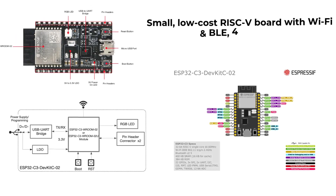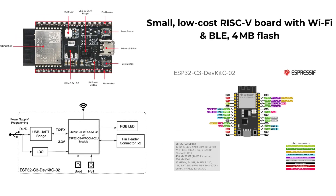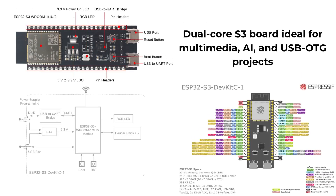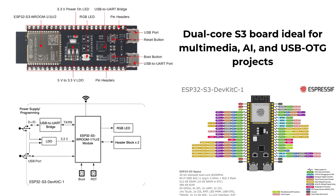The ESP32-C3 DevKit-C-02 is a small, low-cost RISC-V board with Wi-Fi, BLE and 4 MB of flash. The ESP32-S3 DevKit-C-01 is a dual-core S3 board, ideal for multimedia, AI and USB OTG projects.